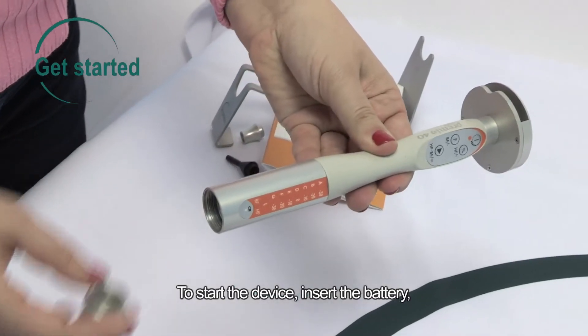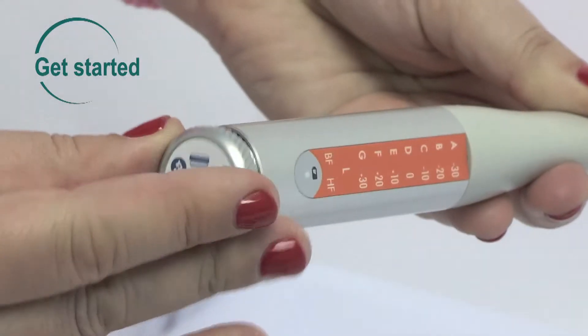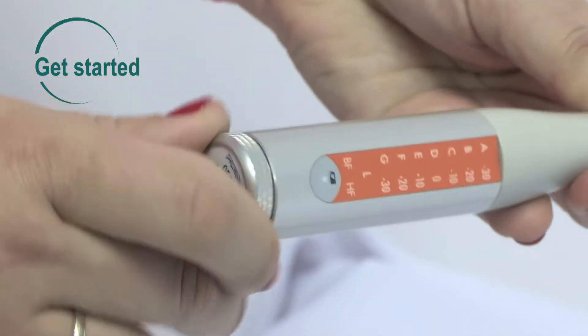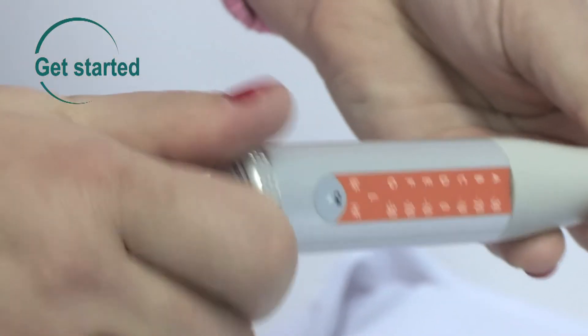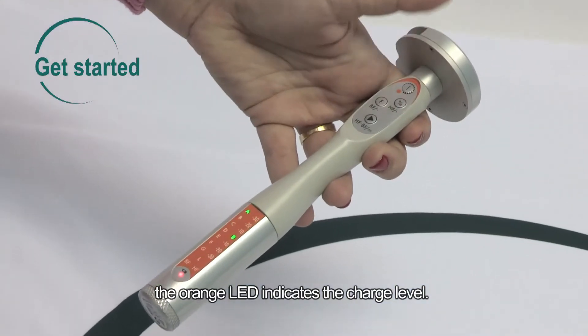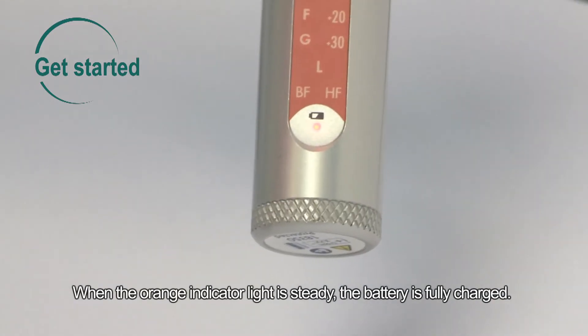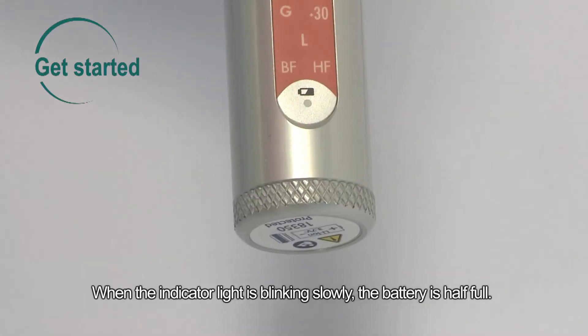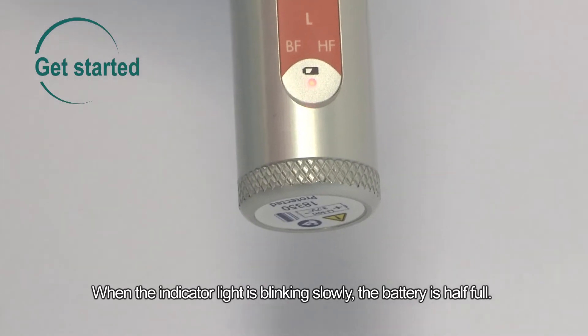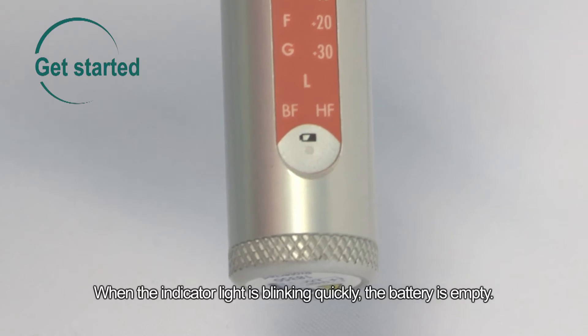To start the device, insert the battery, then press the light button. The orange LED indicates the charge level. When the orange indicator light is steady, the battery is fully charged. When the indicator light is blinking slowly, the battery is half full. When the indicator light is blinking quickly, the battery is empty.